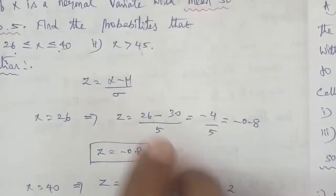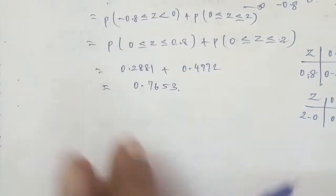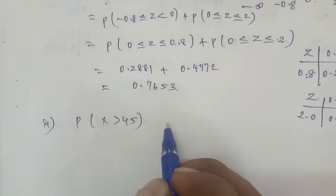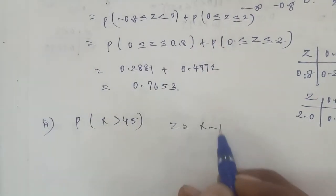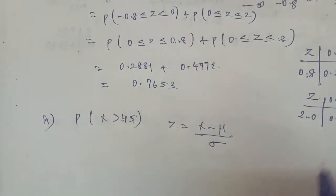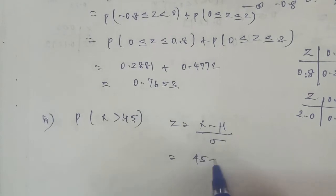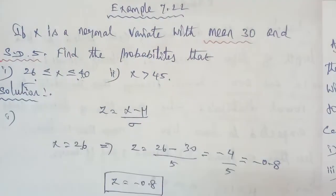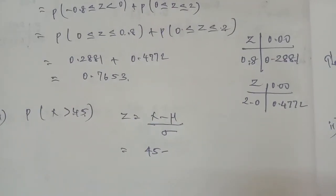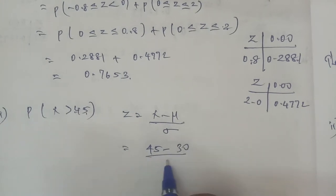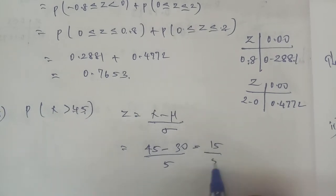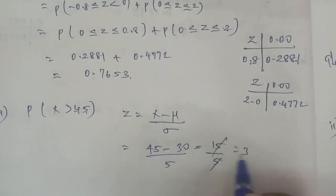Sub-problem 2 is P(X > 45). Using the same process, the formula is Z = (X - mu) / sigma. Substituting X = 45, mu = 30, sigma = 5: Z = (45 - 30) / 5 = 15 / 5 = 3. Therefore Z is equal to 3.